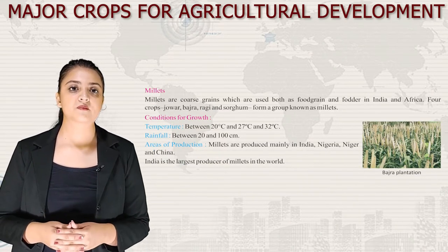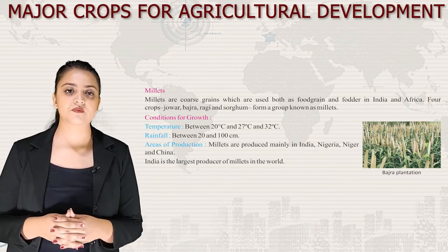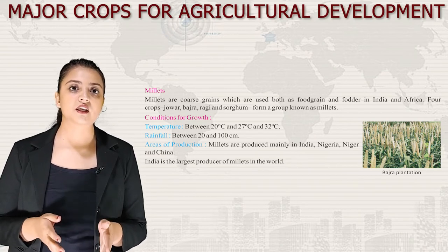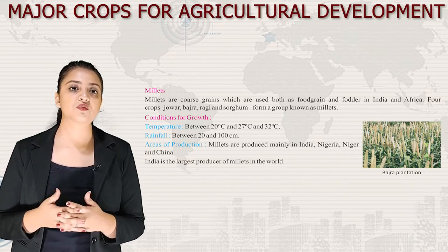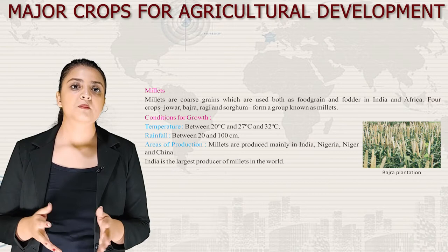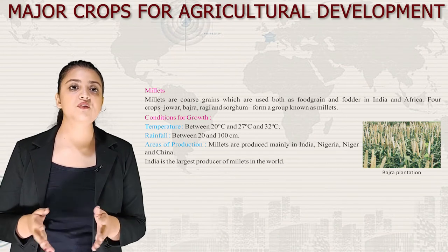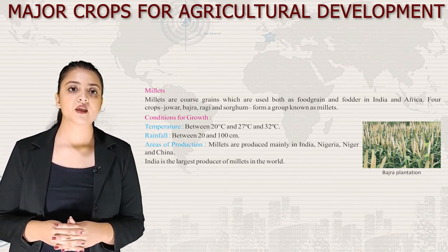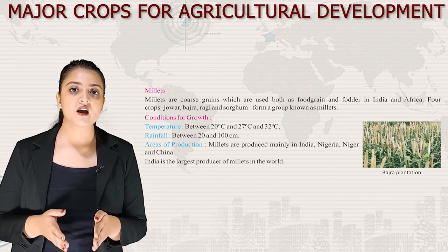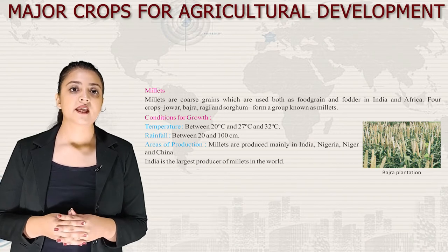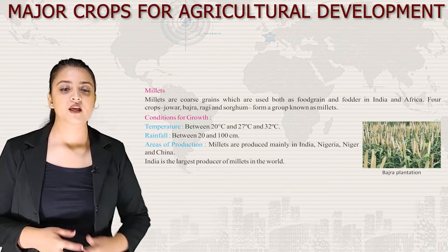Next we have millets — coarse grains used both as food grain and fodder in India and Africa. Four crops — jowar, bajra, ragi and sorghum — form a group known as millets. Conditions for growth: temperature 20°C to 27–32°C and rainfall 20 to 100 cm. Millets are produced mainly in India, Nigeria, Niger and China. India is the largest producer of millets in the world.